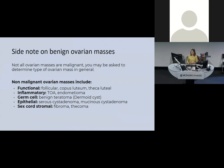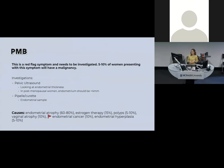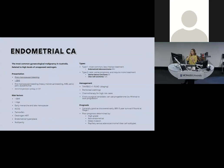For uterine cancer, the red flag symptom is postmenopausal bleeding — you must always investigate PMB. Around 10–20% of women presenting with PMB will have an endometrial cancer. Investigation involves pelvic ultrasound — the endometrium should be less than 4mm post-menopausally — and a pipelle curette. Endometrial cancer is the most common gynaecological cancer in Australia and is related to long periods of unopposed oestrogen. It may also be picked up on CST when abnormal cells migrate down.